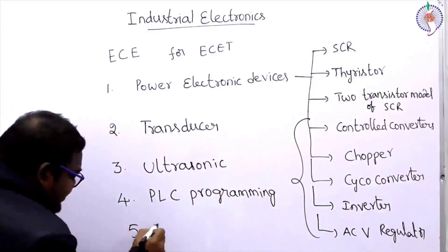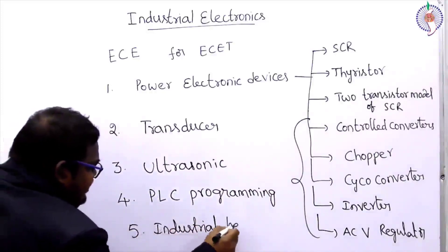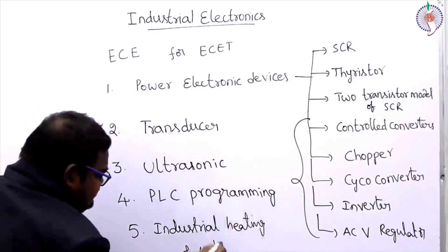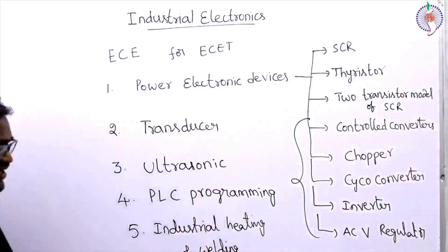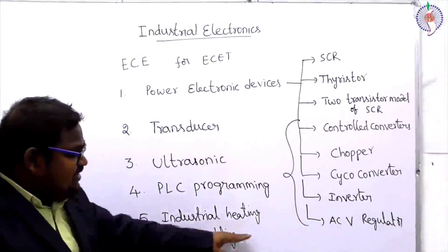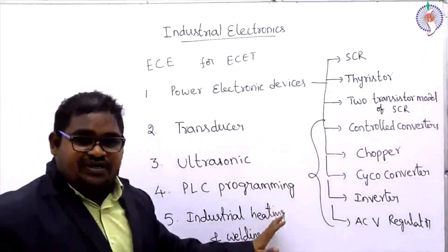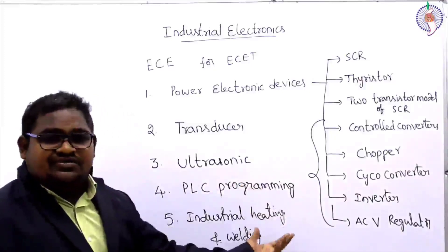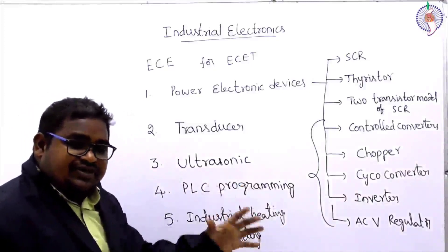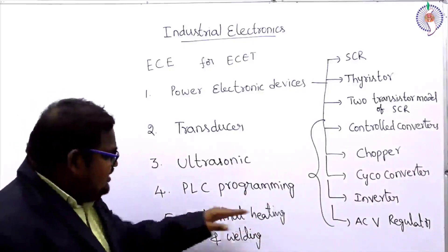The next one is industrial heating and welding. We will see some important points regarding industrial heating - what is heating, what are the various types of heating available. Then, applications of heating are very important. At the same time, welding is also important - what are the various types of welding methods and for which welding which type of material is used. So those things we will see under industrial heating and welding.